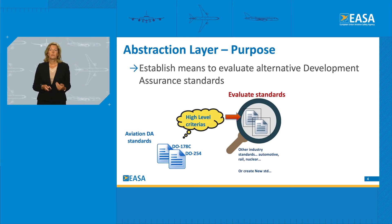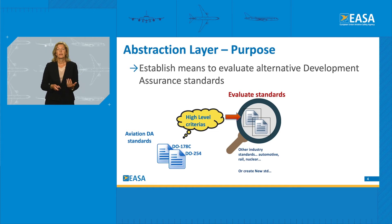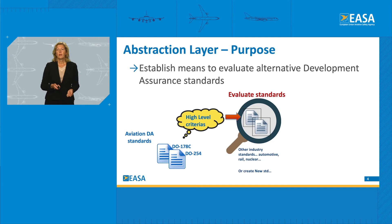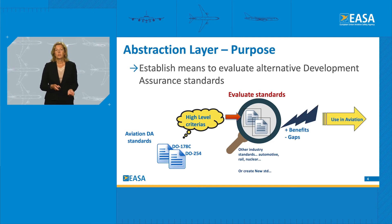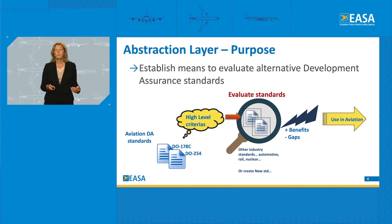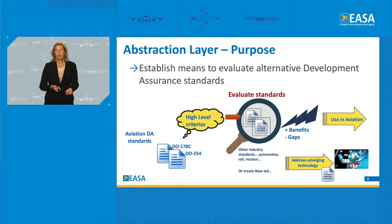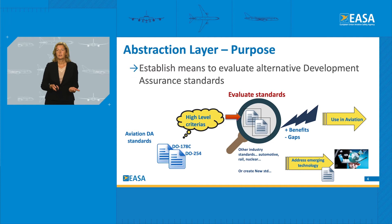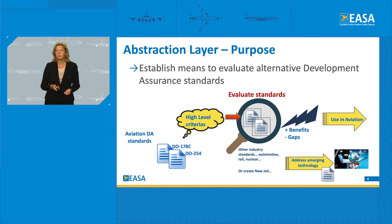Those criteria are then used to evaluate alternate standards, and here we depict a few examples. From these, we will identify some benefits of using those alternatives or certain gaps, and this assessment can be used to address their usage in aviation. Also, for addressing emerging technologies, we could use these high-level criteria as a basis to create new industry standards.